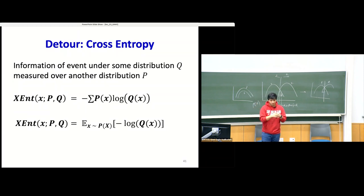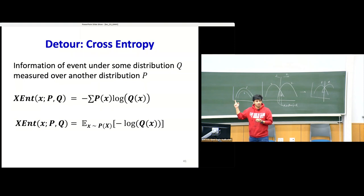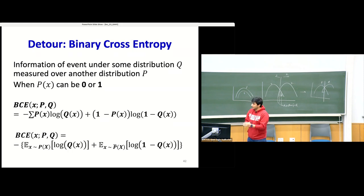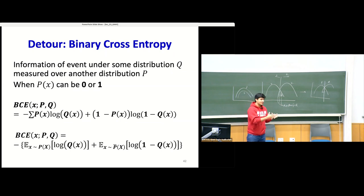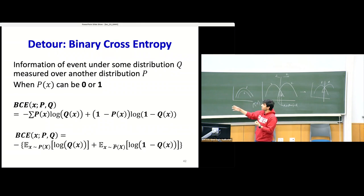Binary cross entropy: the discriminator is really just a binary classifier that tries to classify all real images as one and all fake images as zero. The binary cross entropy formula opens up to look like a large summation term. P(x) can only take two values — zero or one. When it's zero, the first term cancels out and the second stays in; when it's one, the second term cancels out and the first stays in. We can write it as an expectation because expectation is a weighted sum with probabilities.